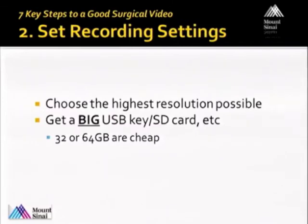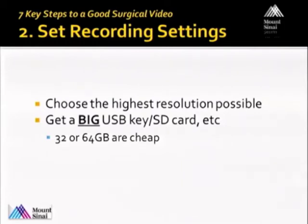Tip number two: make sure you set your recording settings right. Usually with these digital recorders, you have a bunch of different options — you can set it to low, medium, or high resolution. Some people will keep that routinely set on low resolution so there's more storage capacity on the device. But that's not what you want for a video you're going to submit to SAGES. You want to choose the highest settings possible. It's going to give you a big file, but it's going to give you a much better picture. Get a 32 or 64 gigabyte USB key — they're not that expensive — and that allows you to transfer the data pretty easily.